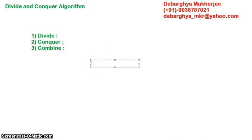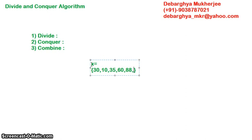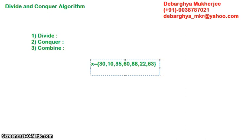Say we have an array with some random values like 30, 10, 35, 60, 88, 22, and 63. These are some sample data that we need to maybe search, find the maximum value, or try to sort.